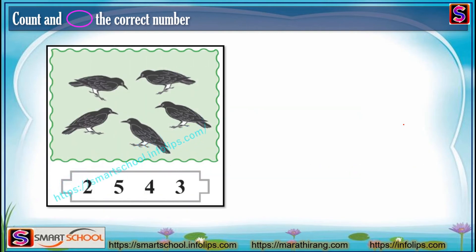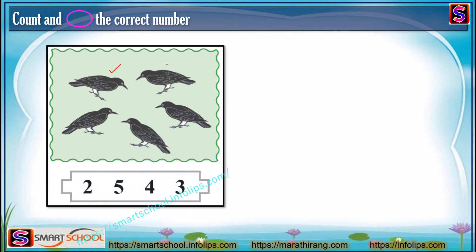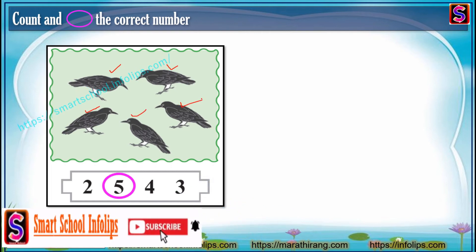Let's see the next picture. Here there are crows — they are making a meeting. Can you count these crows? Yes, just tell me: one, two, three, four, five, six. Circle the number six.